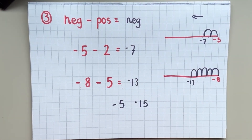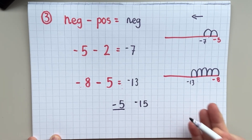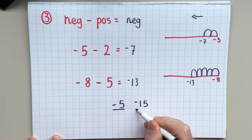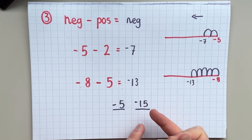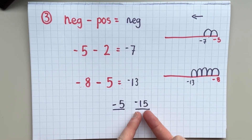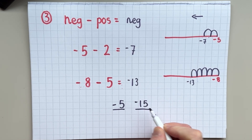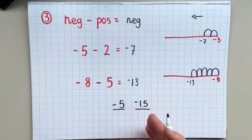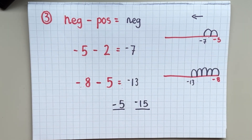The key thing to realize, which some people get confused about, is that negative five is a larger number than negative fifteen. Some people think that because it says fifteen, it is a larger number than negative five. But it's actually negative fifteen that's the smallest number, and negative five is actually the largest. The further left you go on the number line, the smaller the number gets.